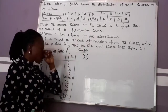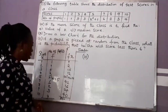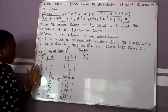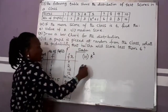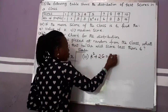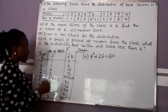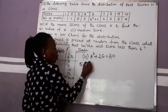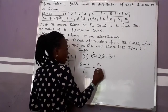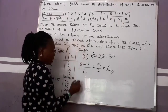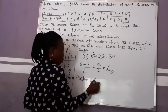Part (ii): find the median — the middle score. The median is always the middle number. With k = 2 and summation F = 30, the median falls between the 15th and 16th values, which lie in the scores 5 and 7. Adding them and dividing by 2: (5+7)/2 = 12/2 = 6. So the median is 6.